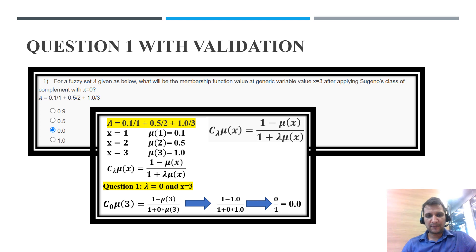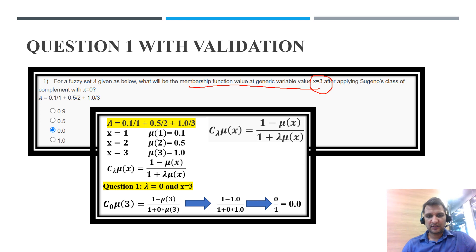This is Question 1. For a fuzzy set A given below, find the membership function value of the generic variable x=3, after applying Sugeno's class of complement with lambda equal to 0. So in this formula, lambda equals 0 and x equals 3.